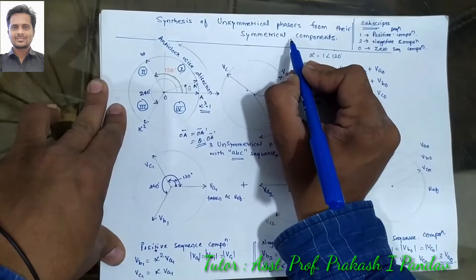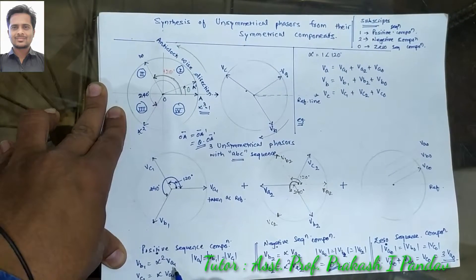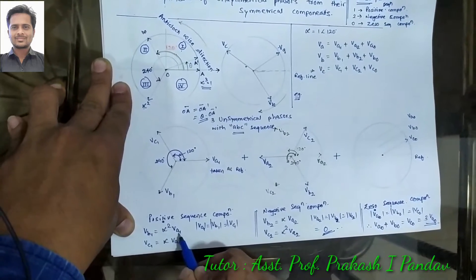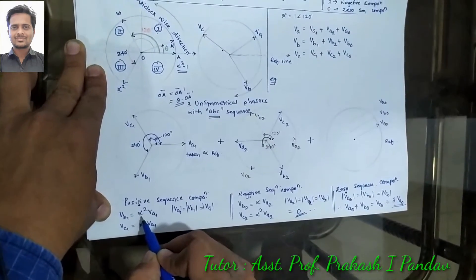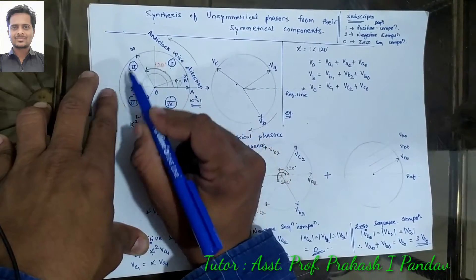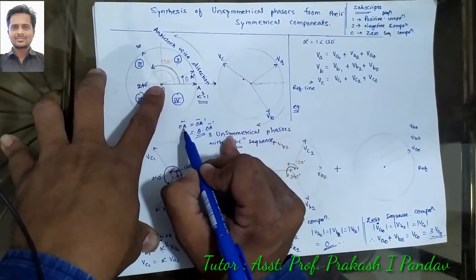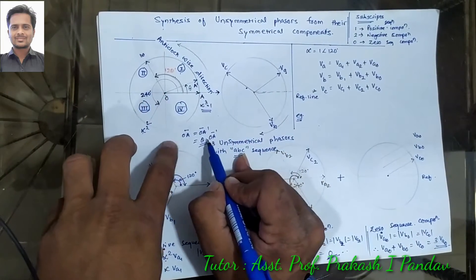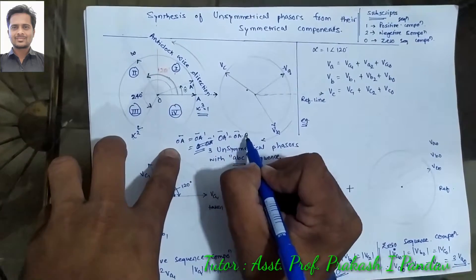There is a relation between positive sequence, negative sequence, and zero sequence components to each other. For example, the positive sequence of A phase is related to the positive sequence of the second phase in terms of alpha and alpha square. Alpha was discussed in our previous lectures. Briefly, if OA is the original vector and it moves by theta degrees, its new position OA dash equals OA into theta.